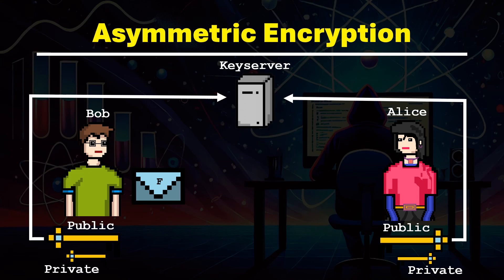Bob wants to send Alice a message. His message is encrypted directly on his device and can only be decrypted by Alice. The message is never unencrypted along the way. Each participant has a key pair consisting of a public and a private key. Before Bob can send the message, it is encrypted with Alice's public key.